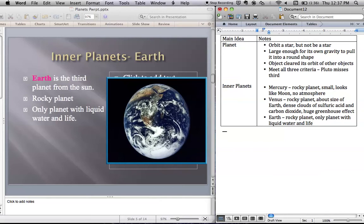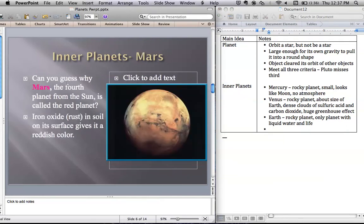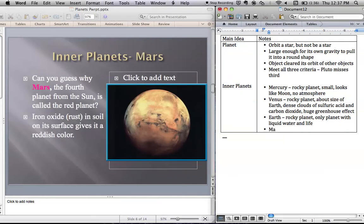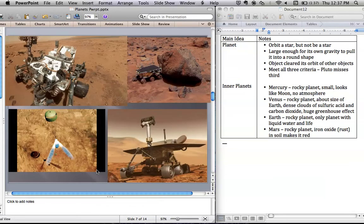So Earth, rocky planet, only planet with liquid water and life. And the last of the inner planets is Mars. It's a rocky planet and it has a lot of iron oxide or rust in the soil makes it look red. And this is probably the planet that's been best explored by humans. We haven't sent people there, but we've sent a lot of different rovers to Mars.